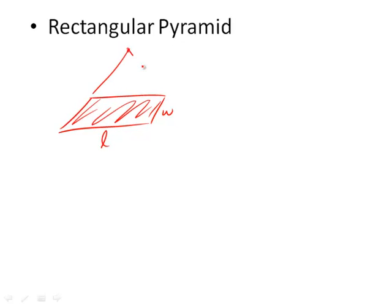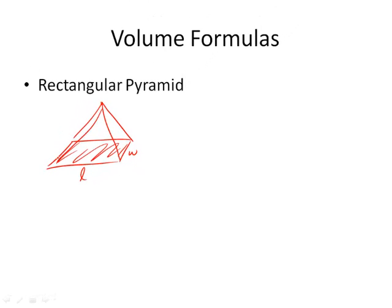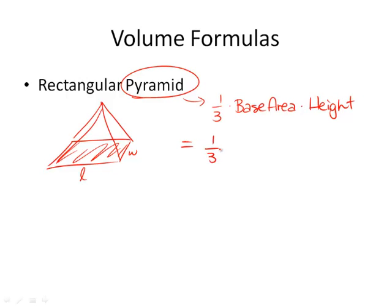Rectangular pyramid. That just means you start with a rectangle which has base length and width, take it to a point. Because it's a pyramid, it's always one third times its base area times its height. That gives you one third times base area length times width times the height, giving you one third length times width times height as the volume formula of a rectangular pyramid.